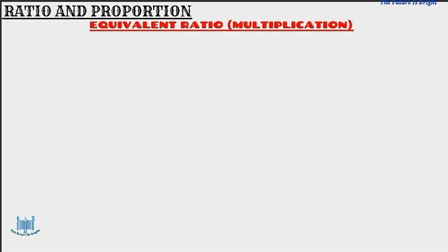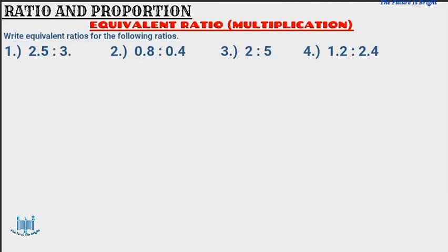I'm going to use these four questions to demonstrate how you can find ratios using multiplication. So question one, we have got 2.5 to 3. So what we can do is we can get these two numbers and multiply them by a common number, or by the same number.